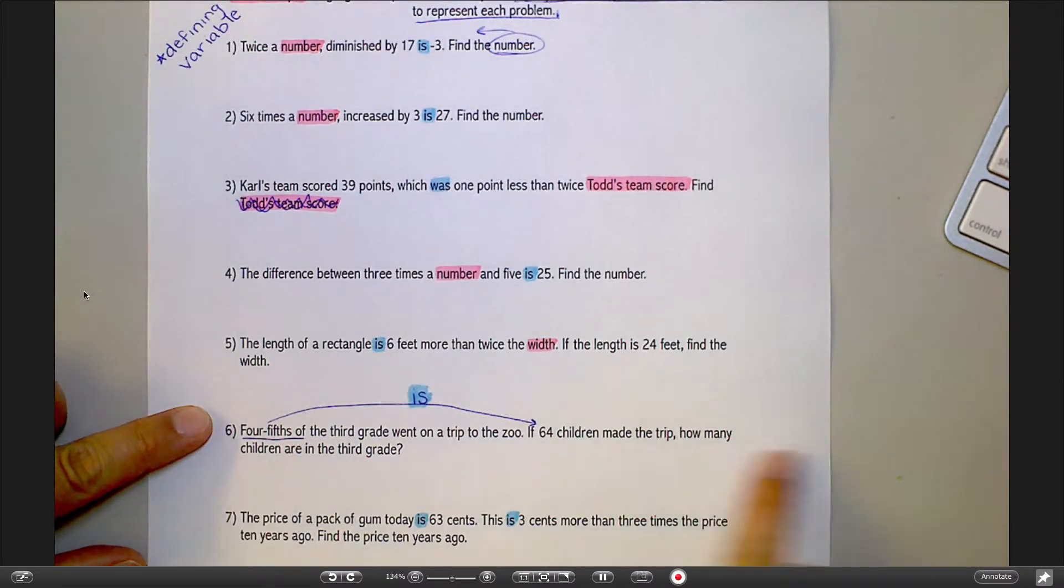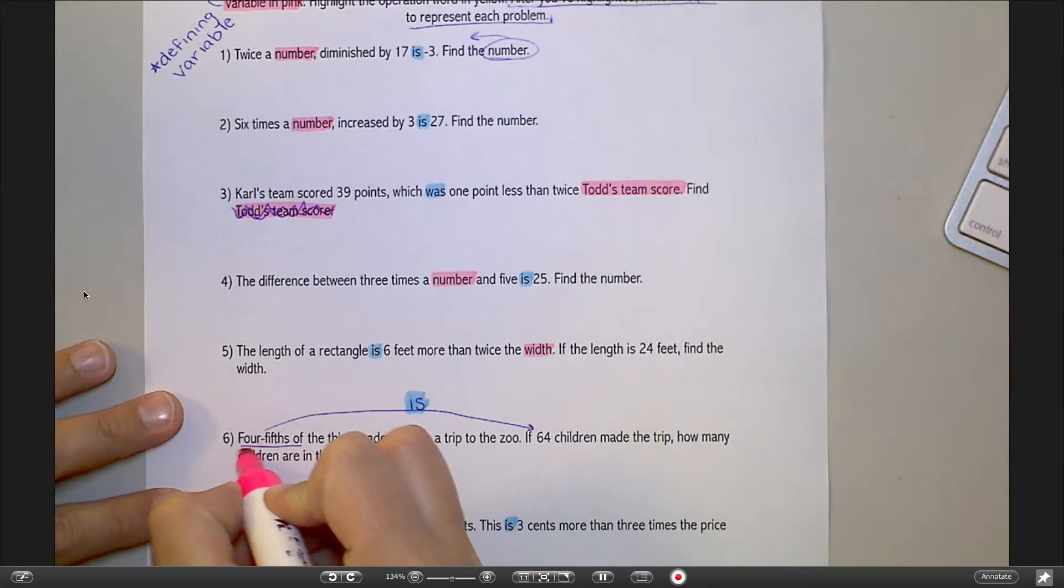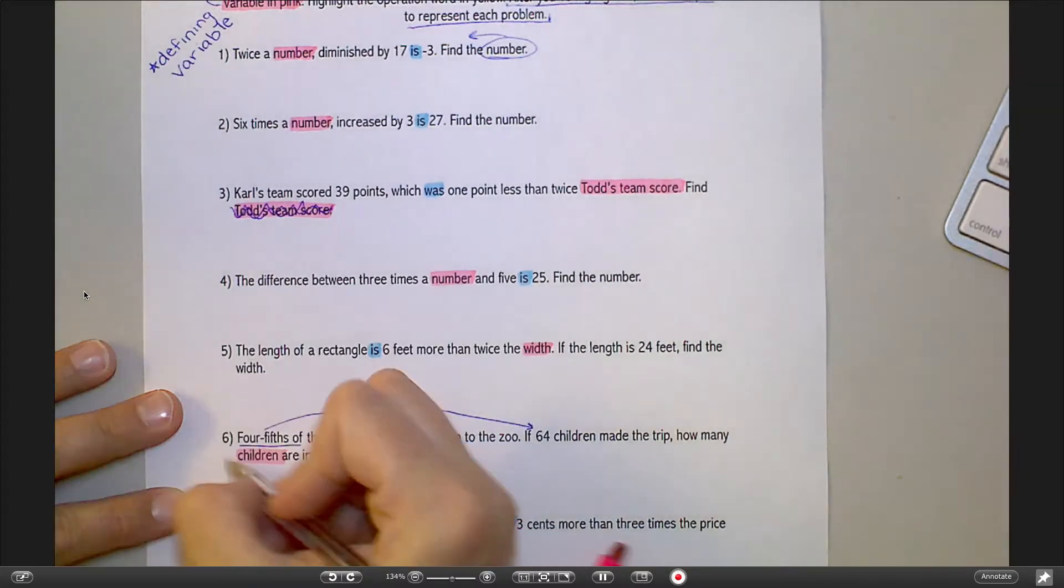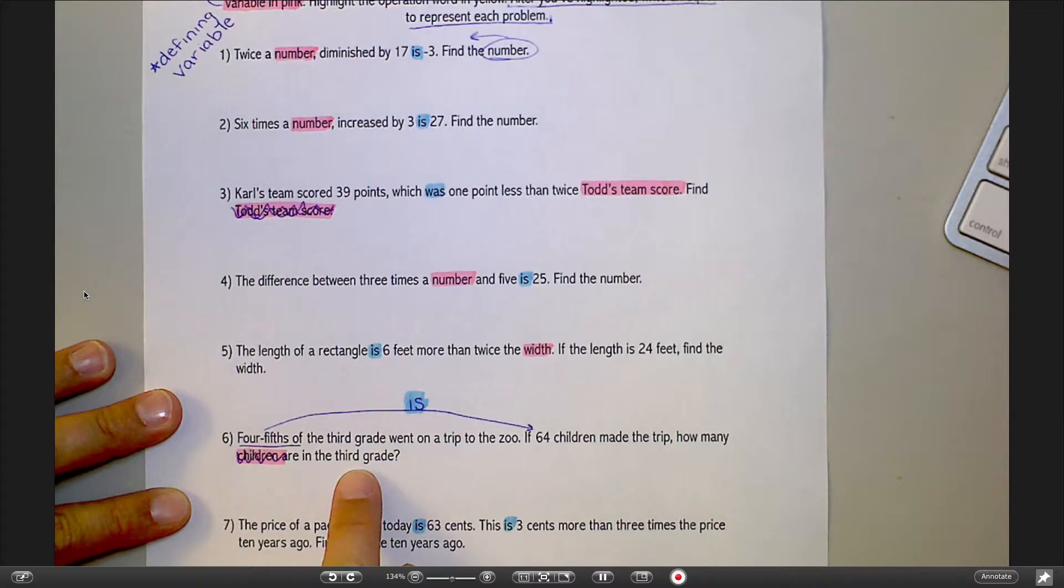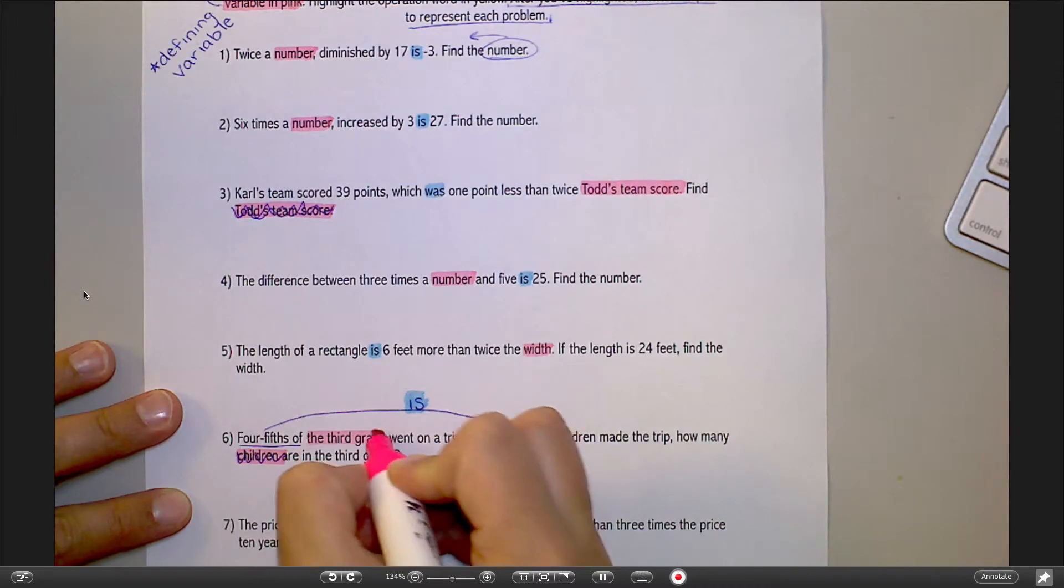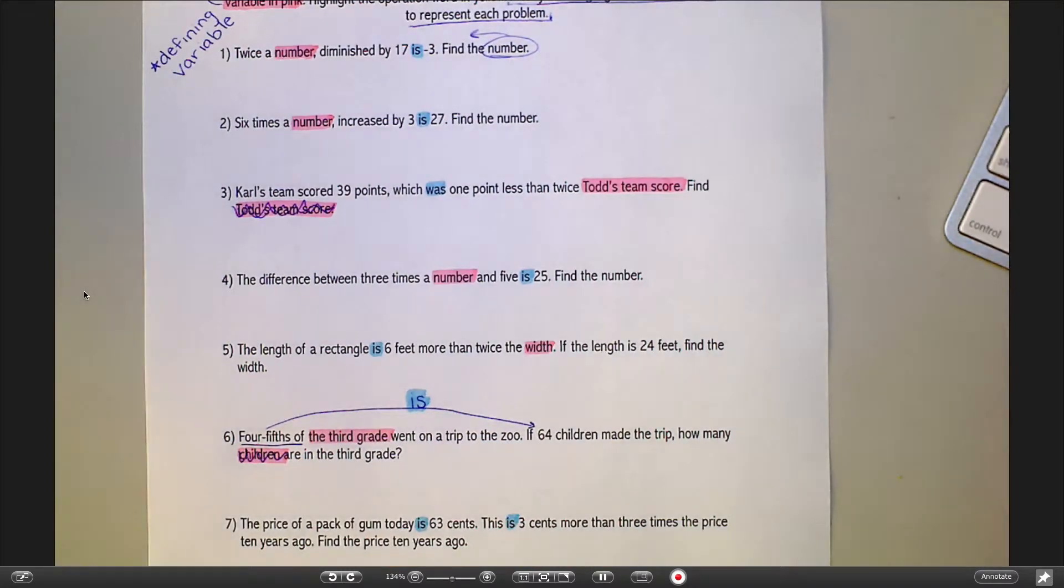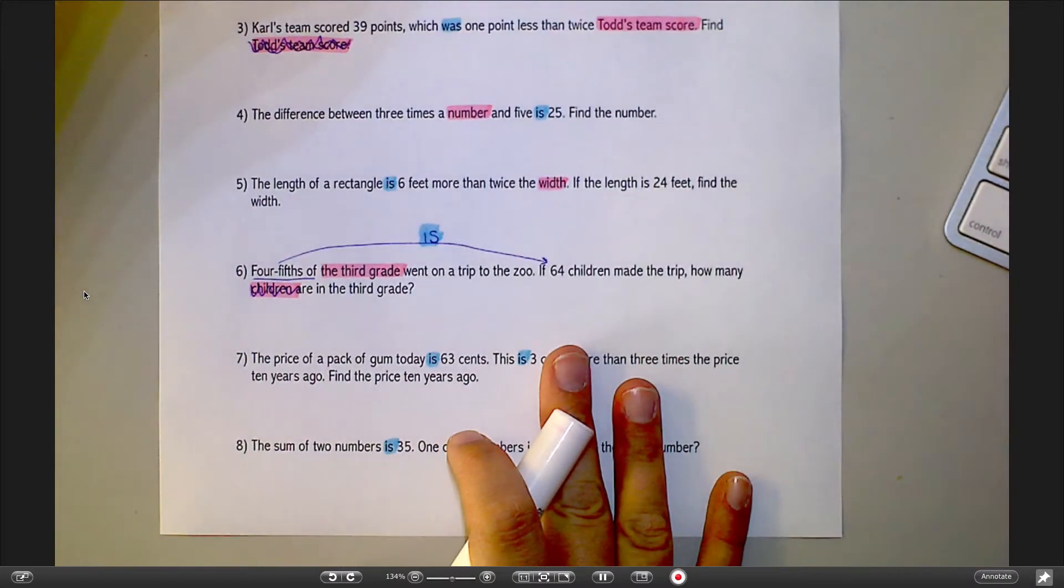Number 6, I'm trying to find how many children are in the 3rd grade. I did it again. I shouldn't be highlighting it there. That's what I'm trying to find. That's where my question is. How many children are in the 3rd grade? So I'm going to look back up here and say, oh, there's my 3rd grade. Now I know it doesn't say children in the 3rd grade, but when I say 4 5ths of the 3rd grade, hopefully that's implied to you that that's 4 5ths of the children in the 3rd grade. That's another tricky one.